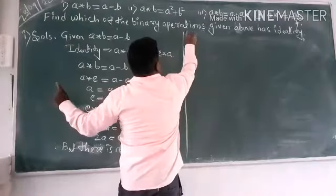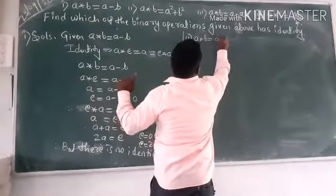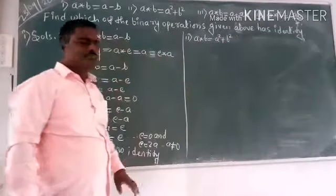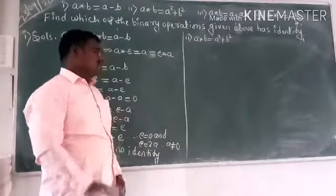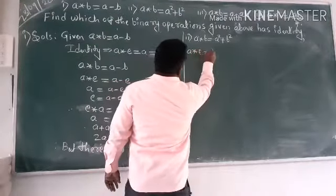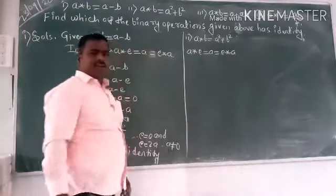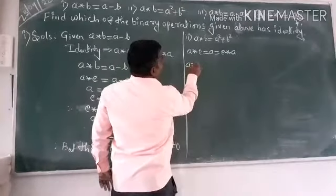Second one, what is the second one? A star b, given value is a square plus b square. Anybody can substitute. There is a ring point: a star e equals a, and e star a equals a.